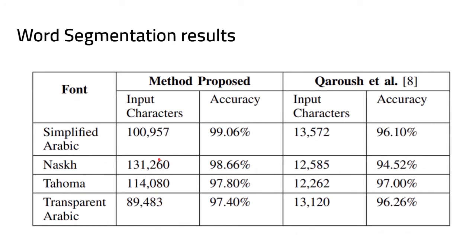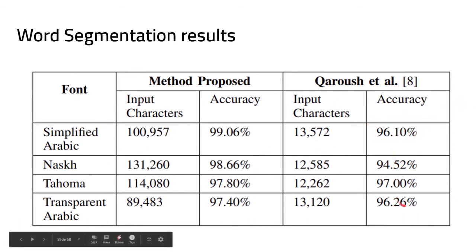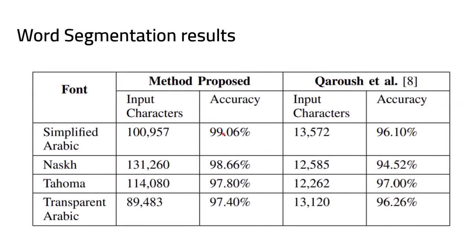Our first accuracy metric was word segmentation results. Compared to a paper published just one year ago with the previous state-of-the-art accuracy of 96.26%, our method achieves 97.4% on the same font and an overall high of 99%. Furthermore, we used a significantly larger test set of 100,000 cases versus their 13,000, demonstrating that our system is both more robust and more accurate.